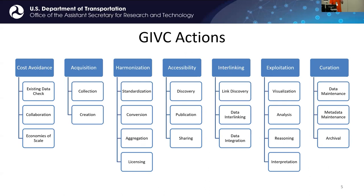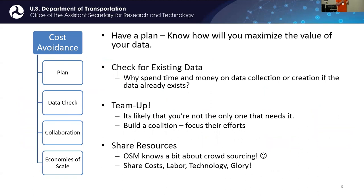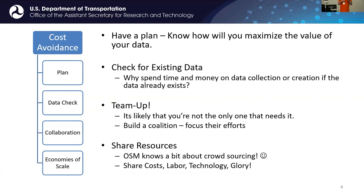I'll go through these quickly because I want to have a chat at the end. Cost avoidance: have a plan. It's a good framework — it helps me find weaknesses and identify gaps to increase value. Check for existing data; if you want it, somebody else most likely has it or wants it as well. If they don't have it, team up, work together, build a coalition, and focus everybody's efforts toward creating the data you need. Share resources.